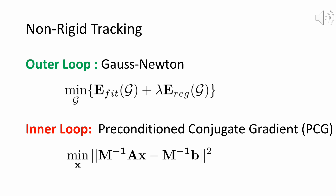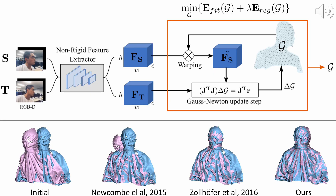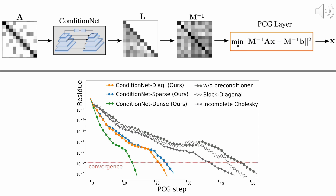One widespread solution for non-rigid tracking has a nested loop structure, with Gauss-Newton to minimize a tracking objective in the outer loop, and preconditioned conjugate gradient (PCG) to solve a sparse linear system in the inner loop. We employ learnable optimizations to improve tracking robustness and speed up solver convergence. First, we upgrade the tracking objective by integrating an alignment data term on deep features learned end-to-end through CNN, helping Gauss-Newton jump over local minima for robust tracking on large non-rigid motions. Second, we introduce a condition net trained to generate a preconditioner such that PCG converges within a small number of steps.